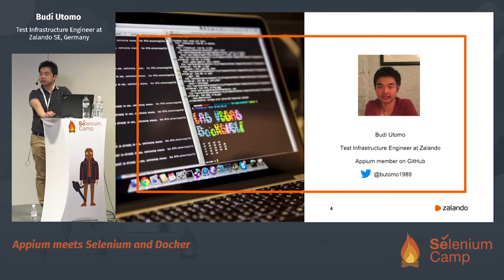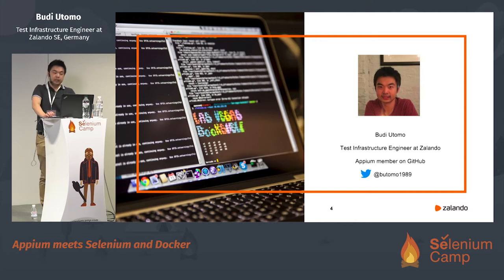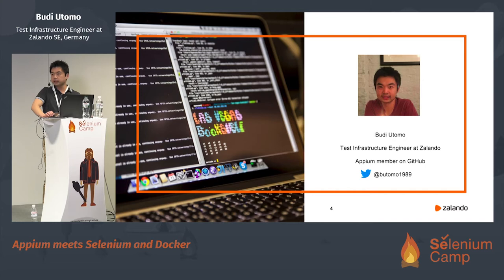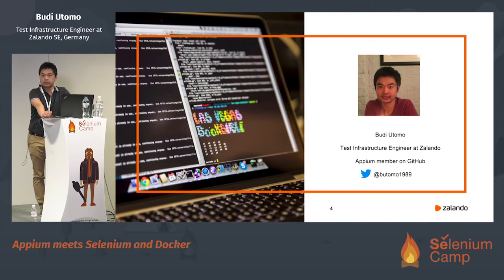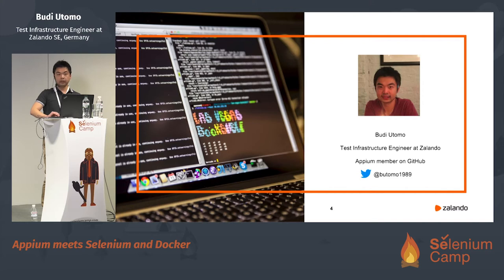About me: my name is Bugio Tomo. I come from Indonesia and I have been living in Berlin, Germany for 10 years. Since 2013 I have been working at Sirengo, and my current role is test infrastructure engineer. I love open source — I'm an open source enthusiast and I do open source in my free time. I'm also an Appium member on GitHub, and at the end here is my Twitter ID.